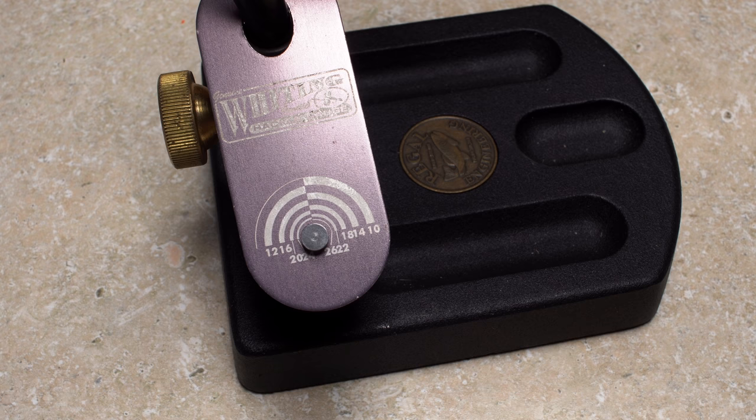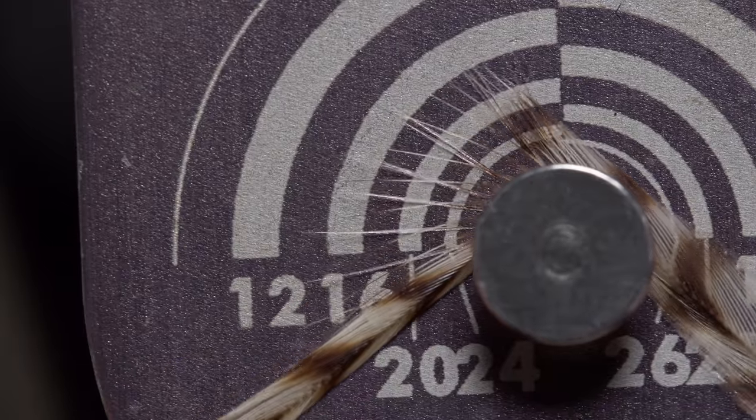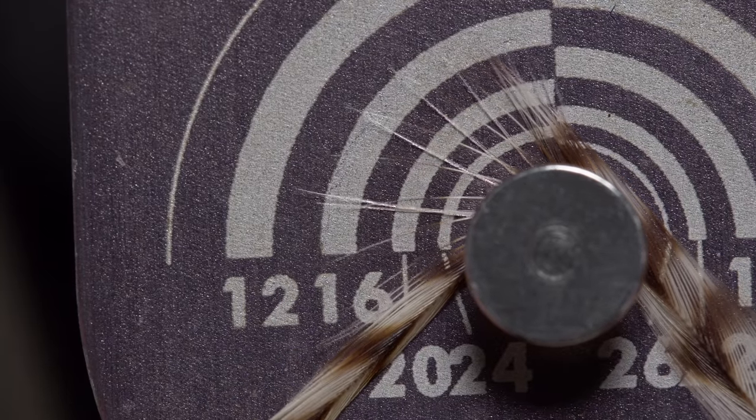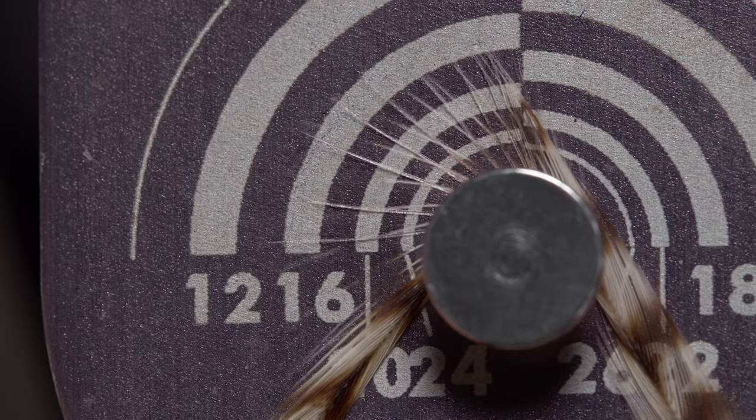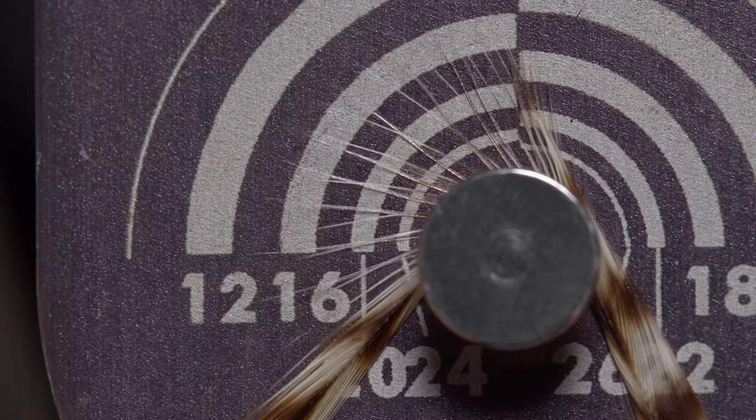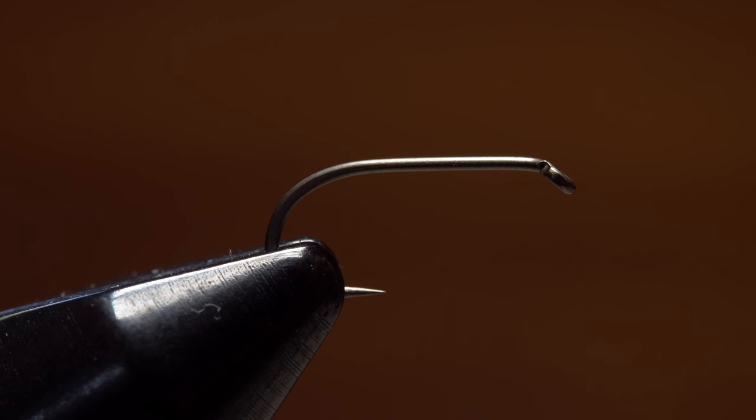Here on the gauge, the hackle fibers measure out to a size 14—in other words, their tips extend to about halfway between 12 and 16. The light and dark zones on the gauge help to accurately see the tips of different colored hackles.